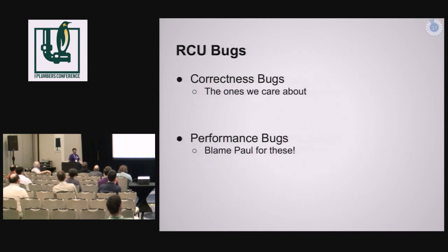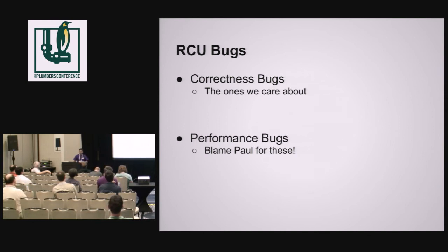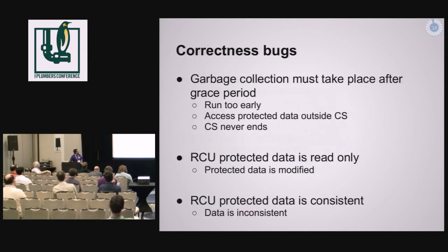So, what do we try to solve? There are two types of bugs: correctness and performance. Performance I'm going to leave to Paul — that's his problem. Correctness is what we are going to look at, because these are sometimes hard to debug and hard to figure out. Garbage collection must always take place after a grace period has gone by — it might be one, it might be two, it might be however many — but it should always take place after that, which brings us to two situations.